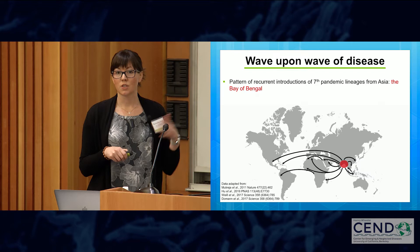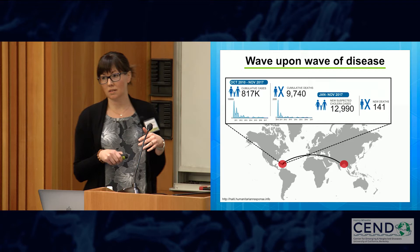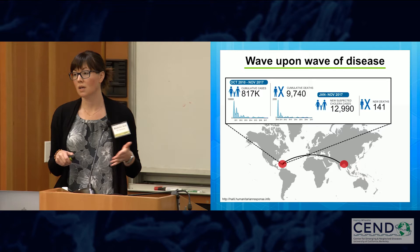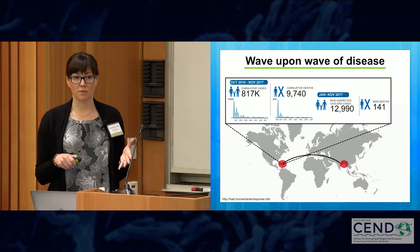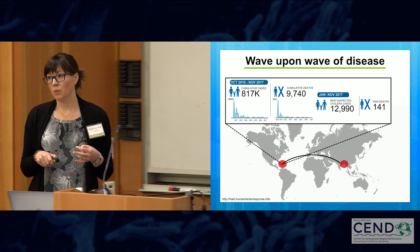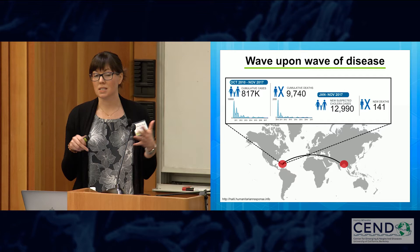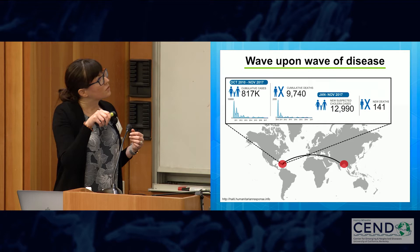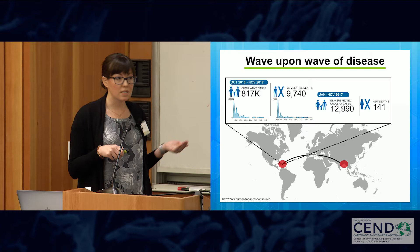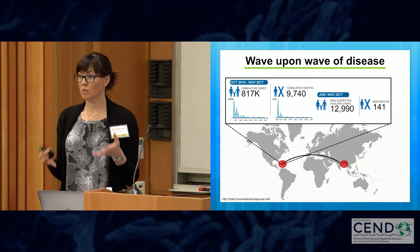This is particularly evident in the outbreak that started in 2010 in Haiti. There was a devastating earthquake in Haiti in 2010 — a country that hadn't seen cholera in 100 years. With a breakdown in infrastructure and many vulnerable individuals, cholera was introduced inadvertently through a UN peacekeeper from Nepal. That set off an outbreak still ongoing today, resulting in nearly 900,000 cases and about 10,000 deaths. As of November 2017, there were still 13,000 new cases the previous year alone.